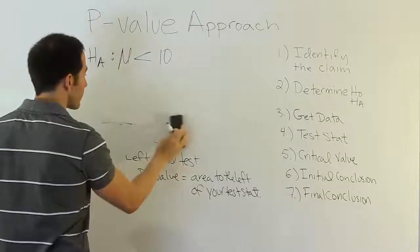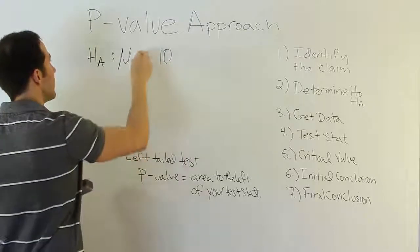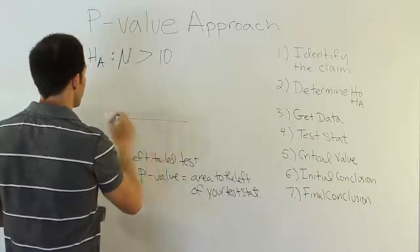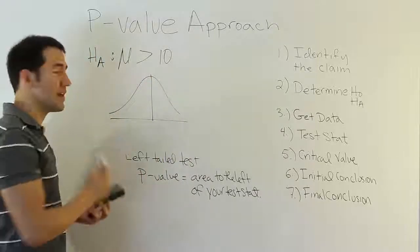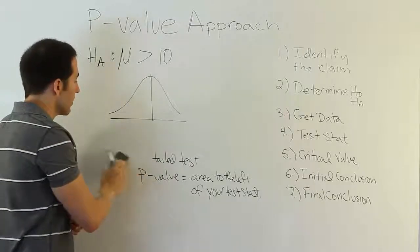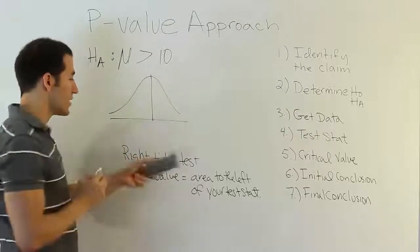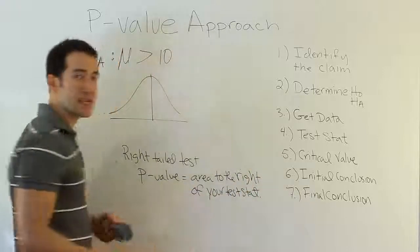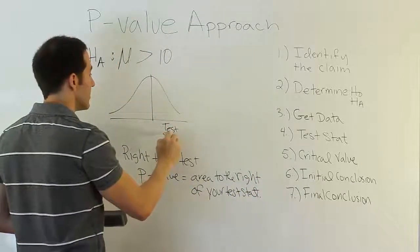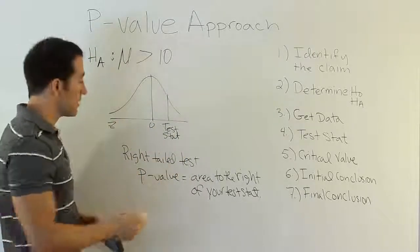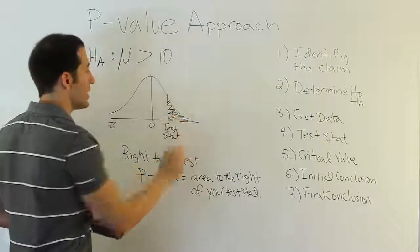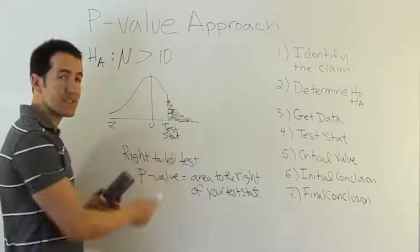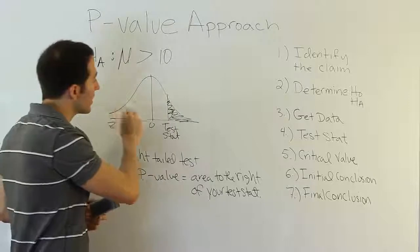Let's look at the scenario where HA has a greater-than symbol — say, the mean is greater than 10. The greater-than indicates a right-tailed test. The rule is: for a right-tailed test, the p-value is the area to the right of the test statistic. So if the test stat lands at a certain point on the z-number line, find the area from that point to the right — that's the p-value. Again, the test stat doesn't always have to be on the right-hand side; the rule still applies regardless.